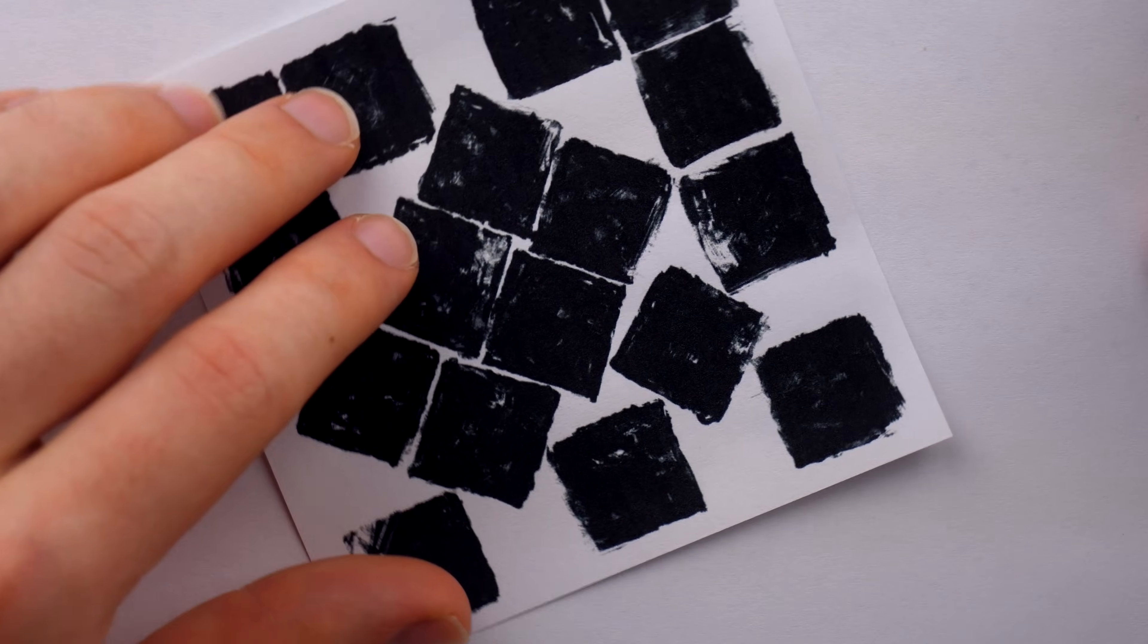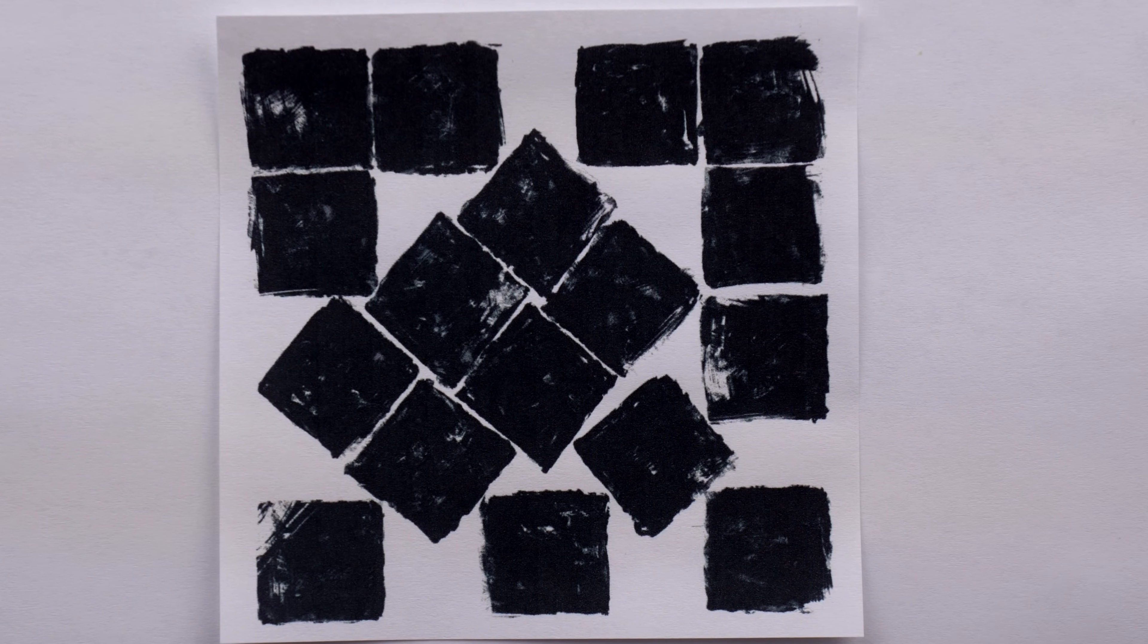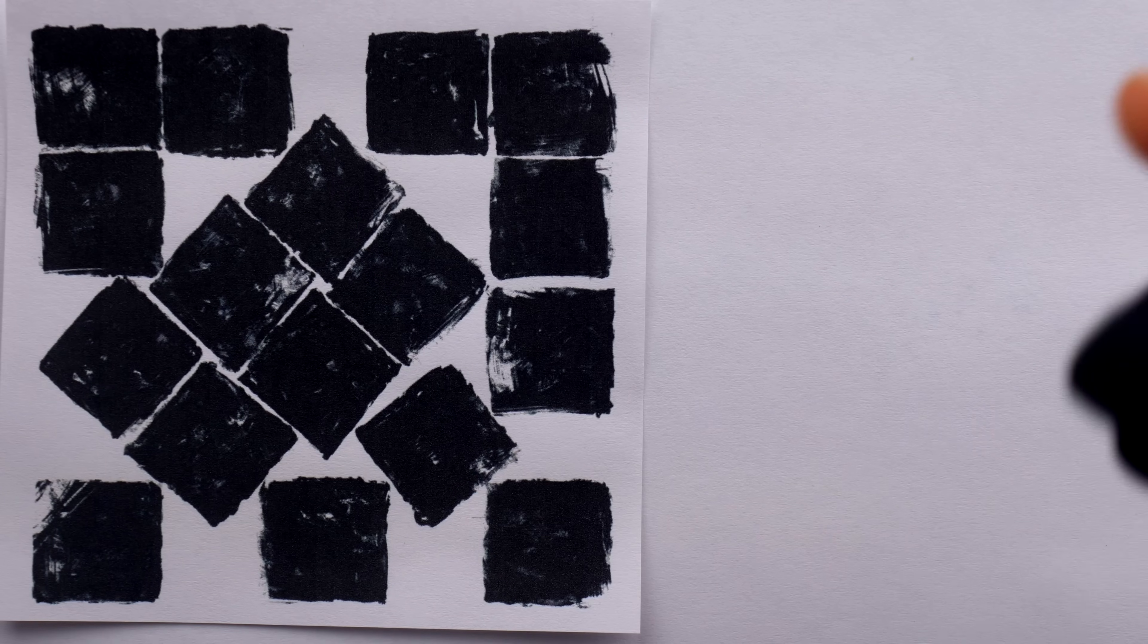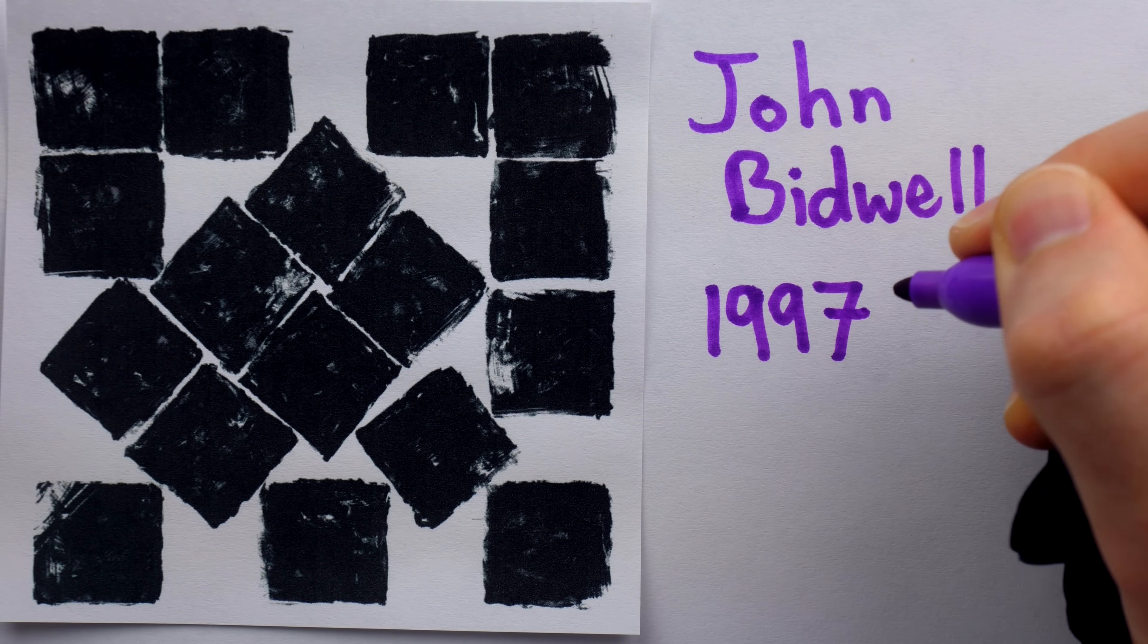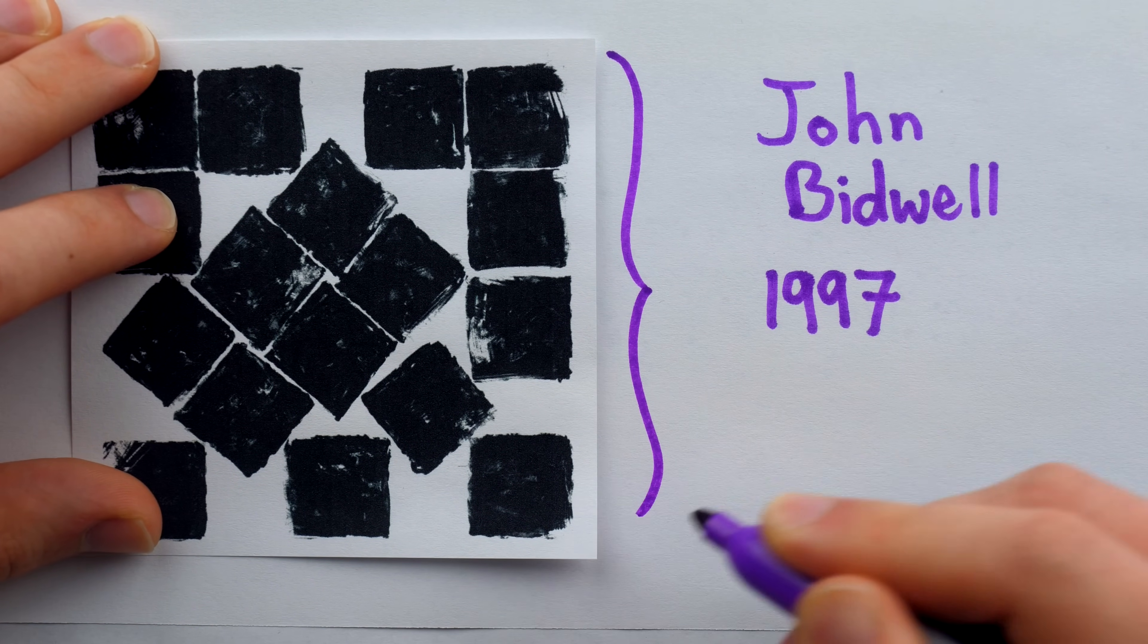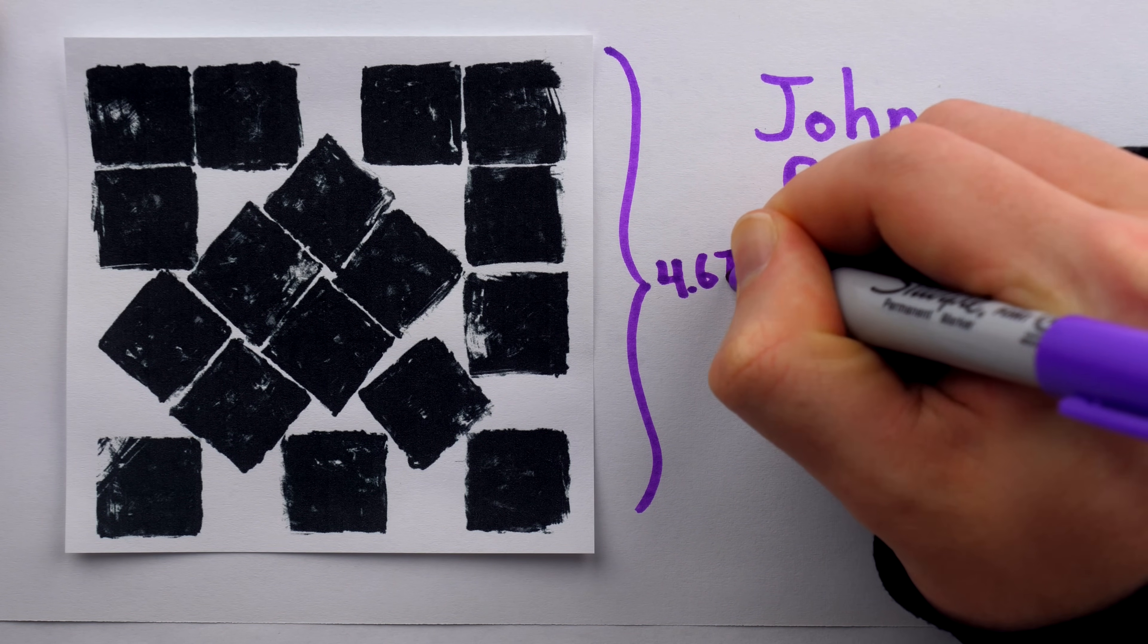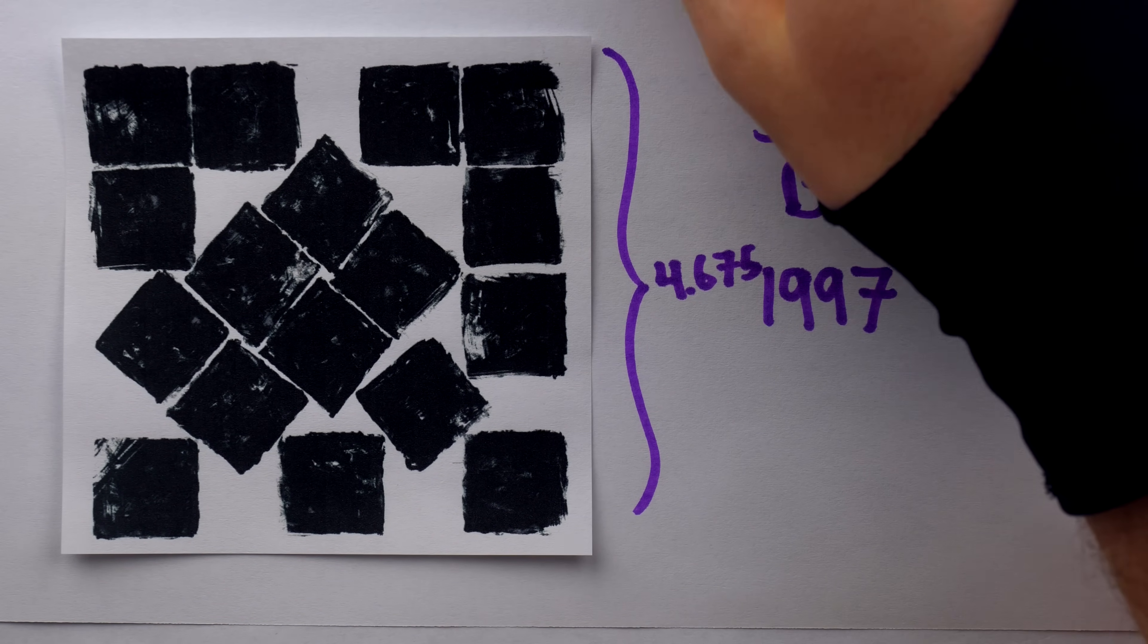The case of 17 squares is notoriously ugly. It looks like this, and I thought that would be the perfect sort of thing to put on a shirt. The 17 square arrangement, which was discovered by John Bidwell in 1997, has not been proven optimal, but it is the best known way.